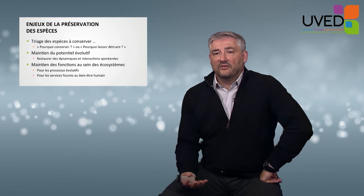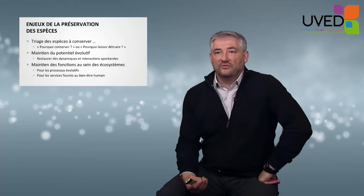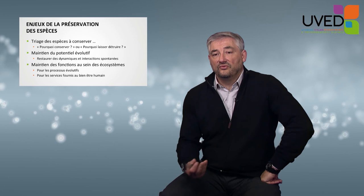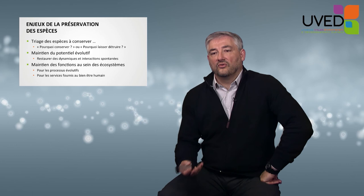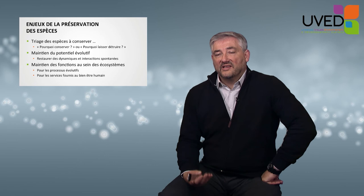In conclusion, what are the stakes of species conservation? Often people say species should be sorted by preservation level to invest where we have the best chances of success — but this constantly raises the question of why we should preserve a given species. The question should be the other way around: why should we allow any organism to be wiped out? The objective of conservation is to preserve the evolutionary potential of species, whose dynamic and spontaneous interactions are the source of evolution. We must also preserve ecosystem functions, which generate evolutionary processes and provide essential services for human well-being.